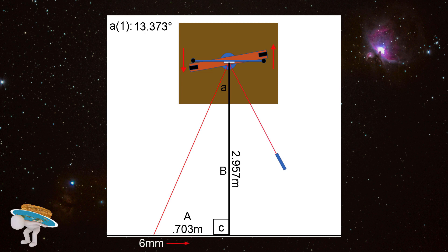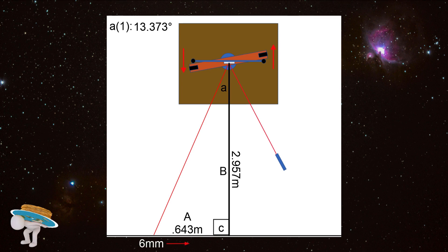The original length on side A was 0.703 meters. The error I made is when I subtracted 6 millimeters, I actually subtracted 6 centimeters. So the correct number is not 0.643, it is 0.697.